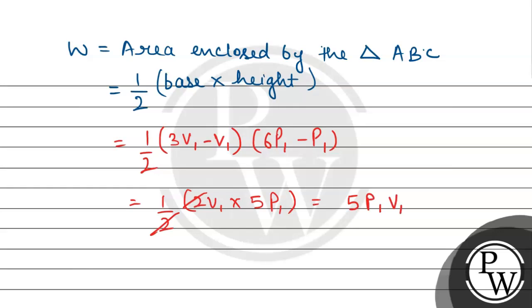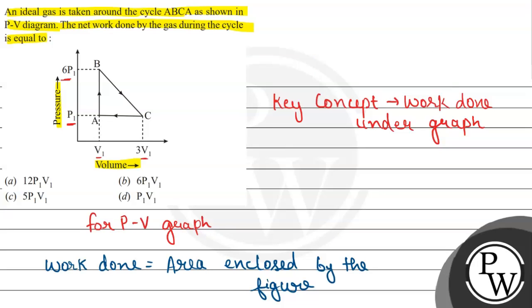So, this will be the net work done by the gas during the cycle which is given under this graph. And from the given option, we can see option C is the correct answer of this question. That is 5P1V1. So, let us mark the option C as the final answer. And A, B and D are incorrect. Hope you understood it well. Best of luck.